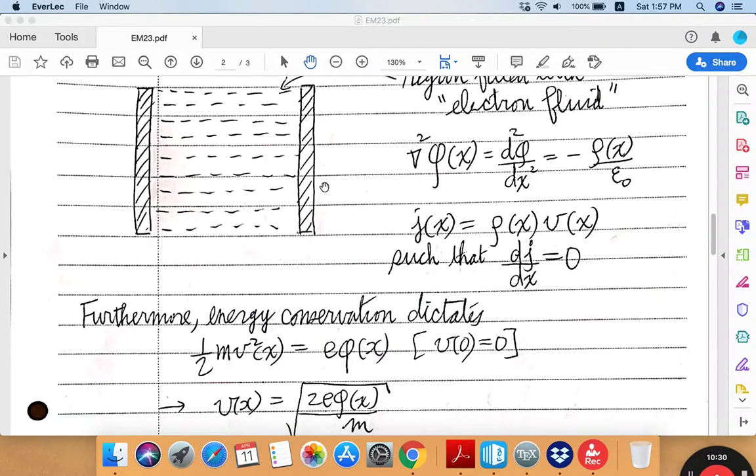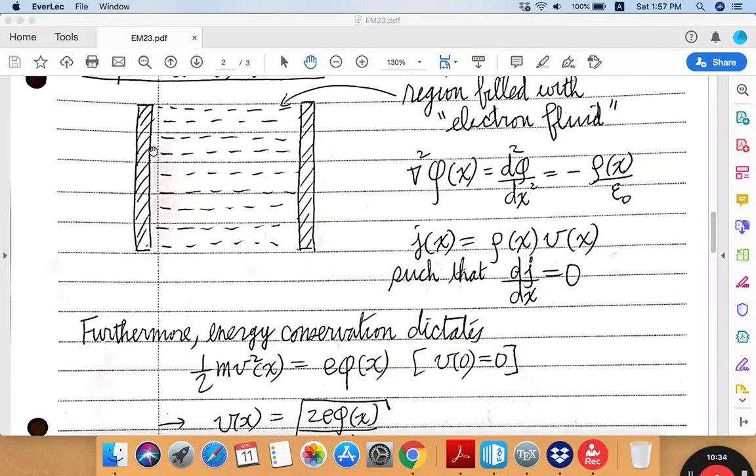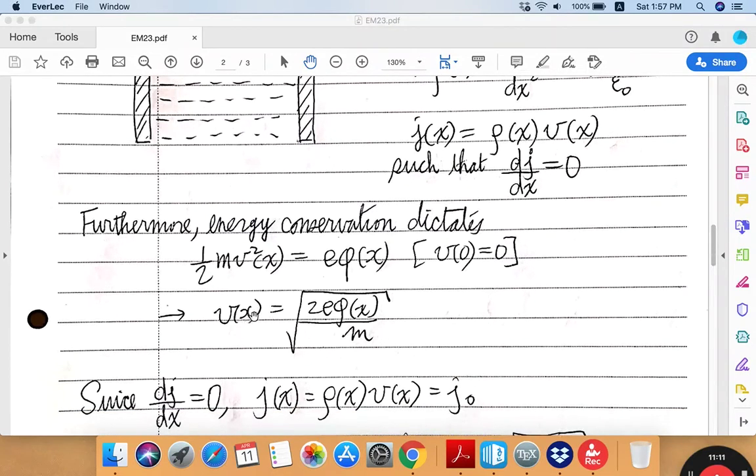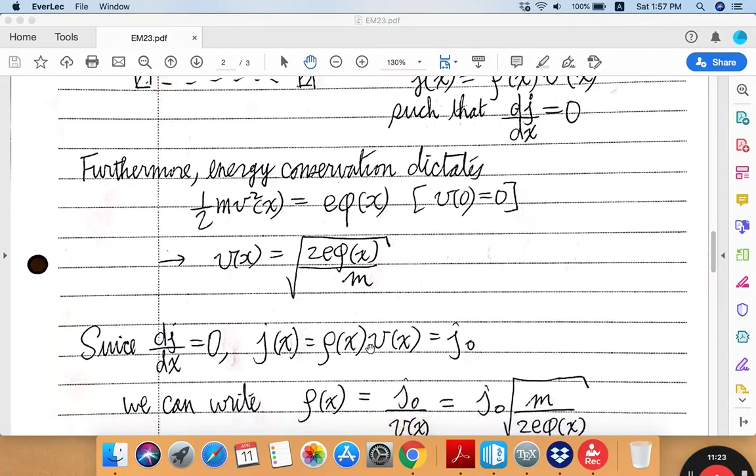And furthermore, there is the energy conservation which dictates that if an electron starts out from this low potential plate with the zero velocity and then begins to gradually accelerate due to the potential difference or the electric field, then its kinetic energy one-half mv squared is coming entirely from the electrostatic potential energy which is electron charge multiplied by the potential at that location. So solving this in terms of v will give you this expression of the velocity as a function of the local potential value like this.